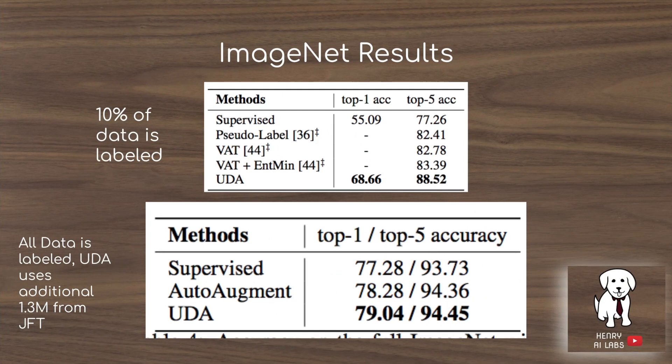Here are some more really interesting results. The top chart shows how this performs on ImageNet when you only have 10% of the labels. The supervised technique means you train the ImageNet model with just the 10% labeled data, whereas using unsupervised data augmentation — taking the 10% labeled data plus the 90% unlabeled data — achieves a much higher 68.66% top-1 and 88.5% top-5 accuracy.